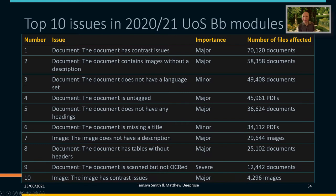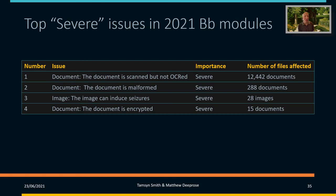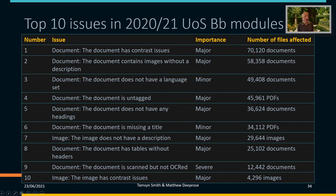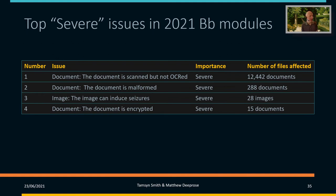So let's go back to the slide deck. We looked at what issues there were in that course — but how are things across our modules for the current 2021 academic year? We have some 366,000 files with accessibility issues, and we can see their importance and the order in which they're occurring. If we filter to just the severe issues, documents that are scanned but not machine-readable — meaning we can't get an effective audio version — are the most severe. There's significant opportunity to resolve a lot of issues to make those alternative file formats as usable as possible.